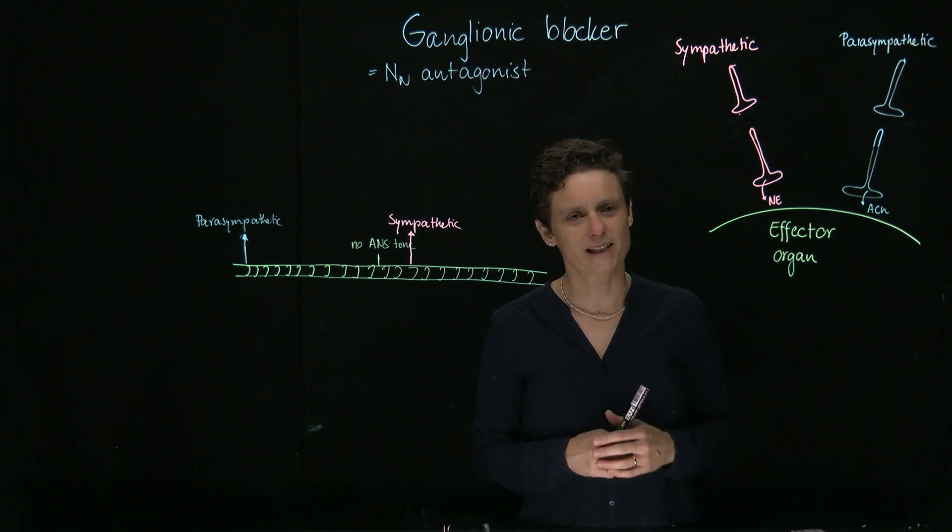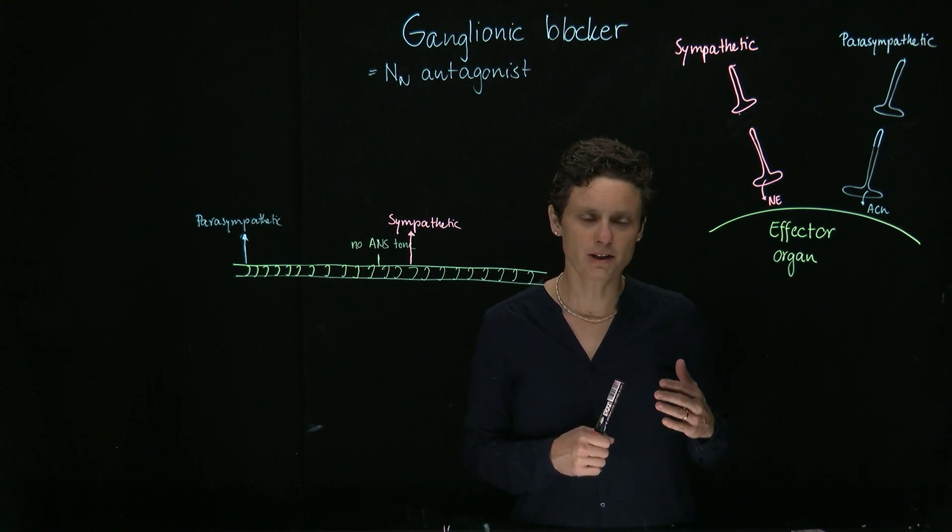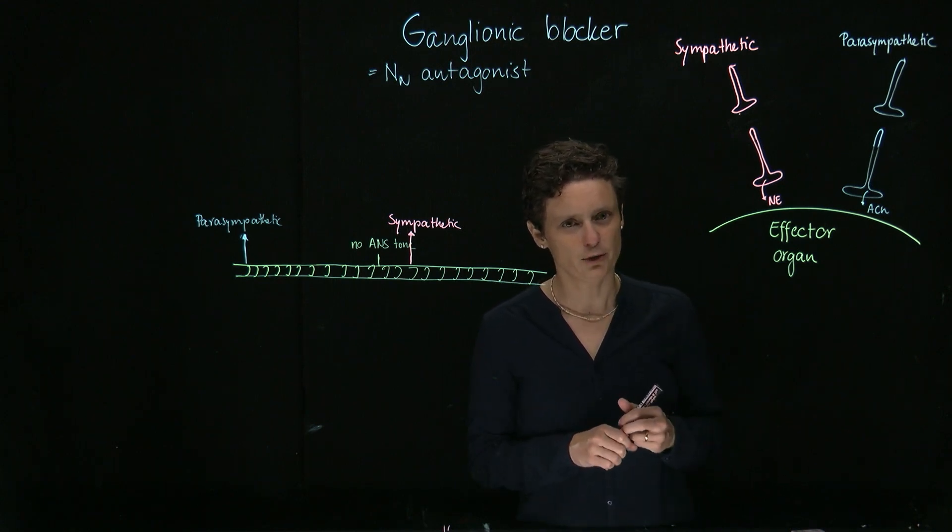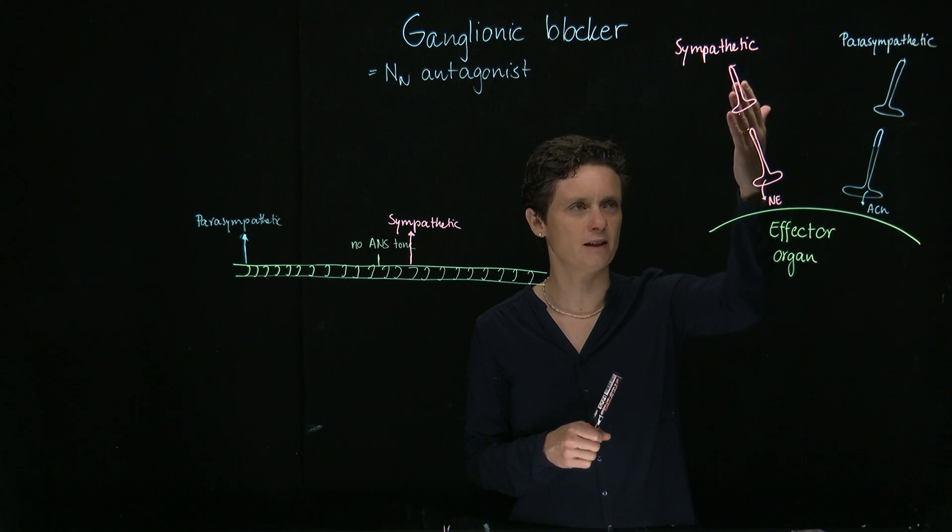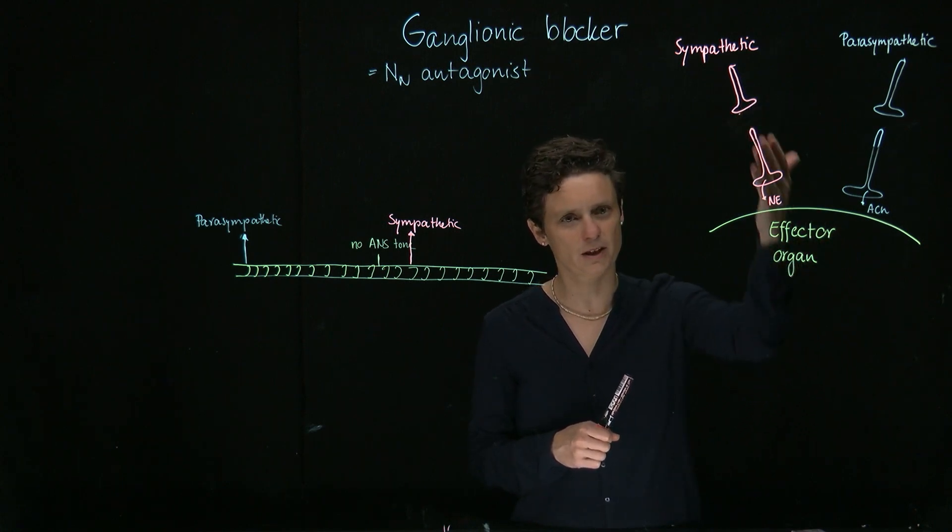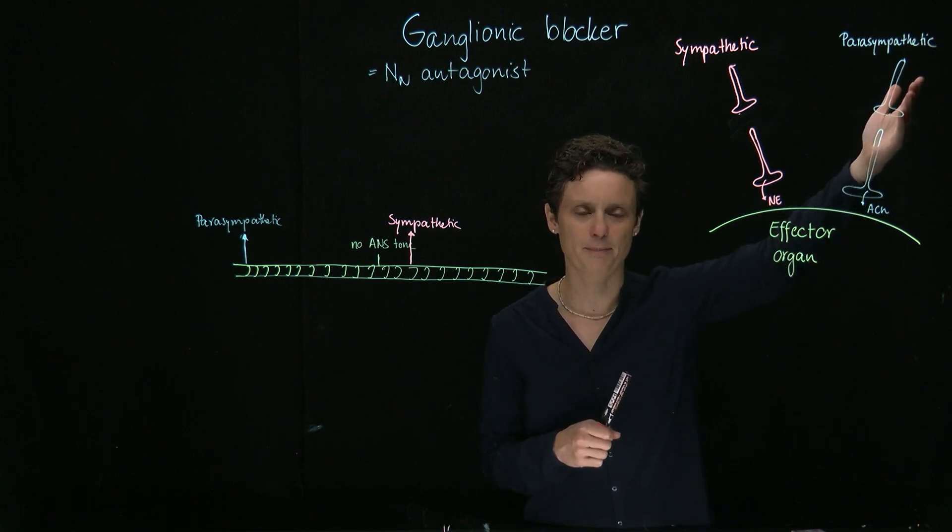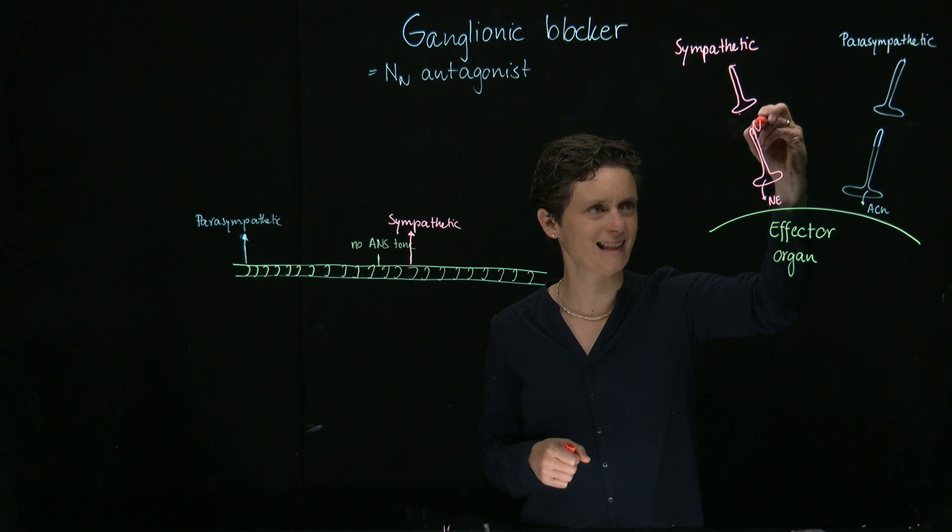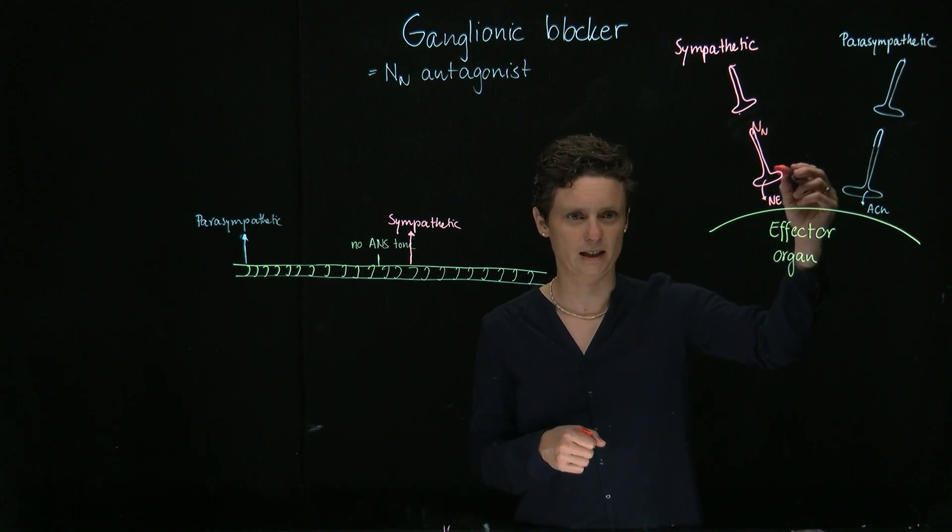These are the receptors that sit in postganglionic somas of sympathetic and parasympathetic neurons. If you look here, there's a sympathetic input to an effector organ with this pre- and postganglionic two-neuron system. And here, the parasympathetic side, we find them right here at the postganglionic neuron.